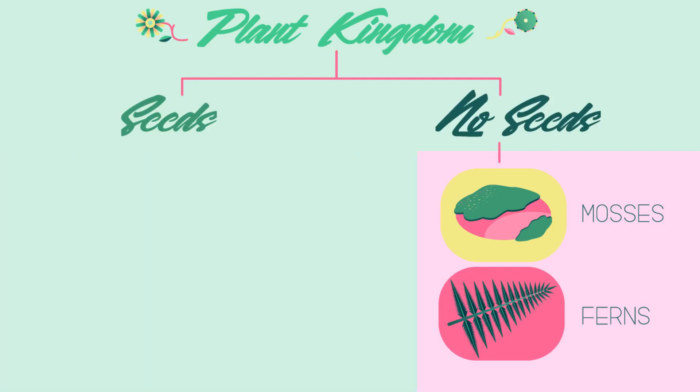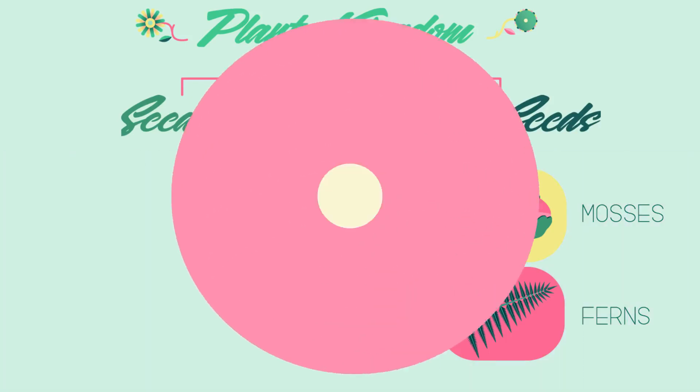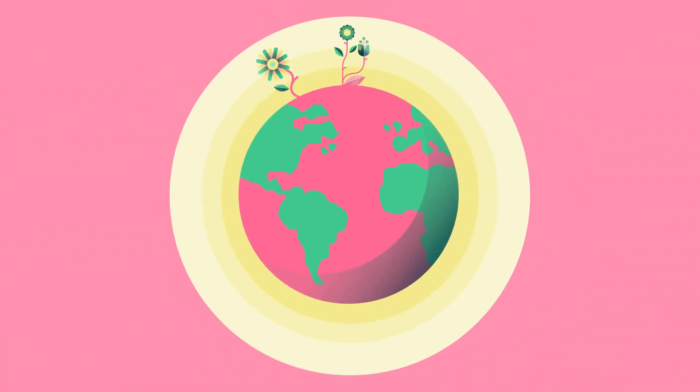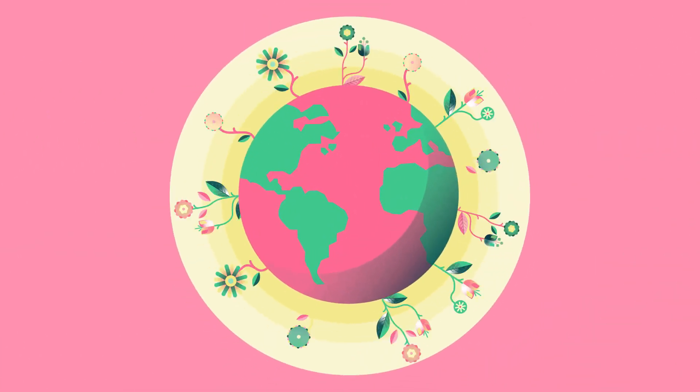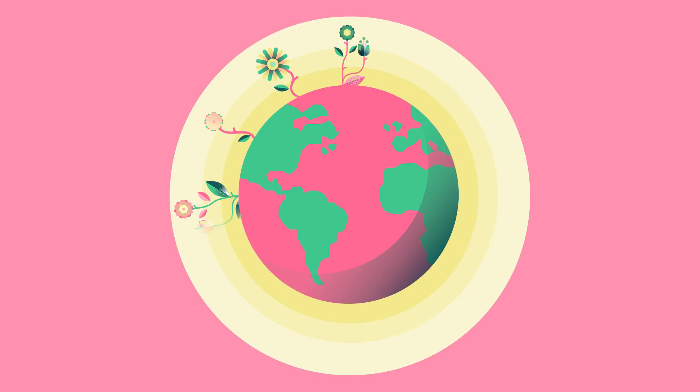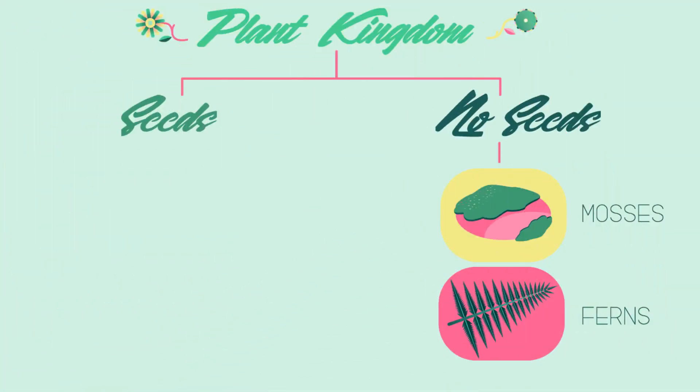The evolution of a seed was a huge evolutionary step for plants. It meant they could grow anywhere on earth, in any environment. They were no longer limited to extremely moist conditions.